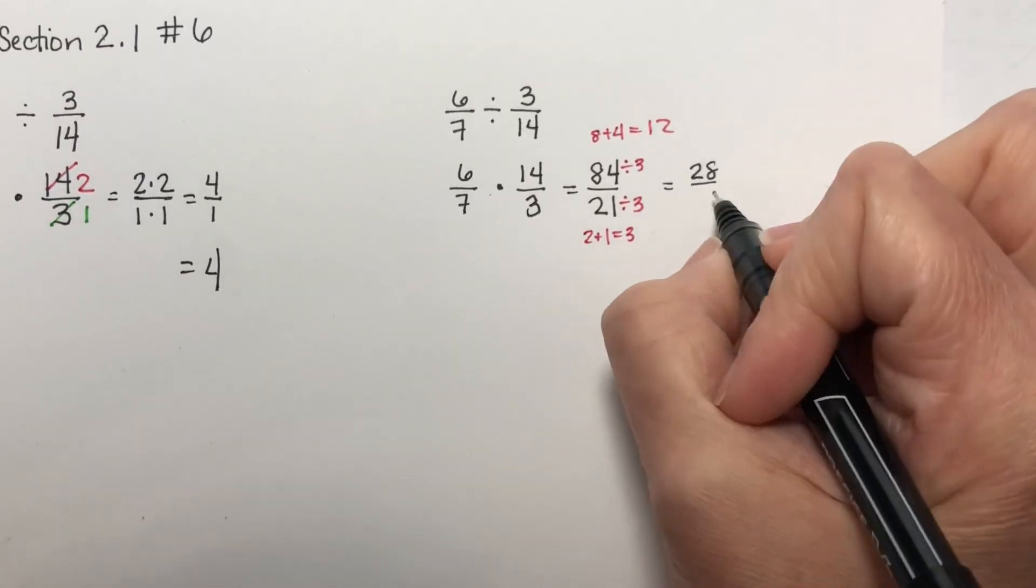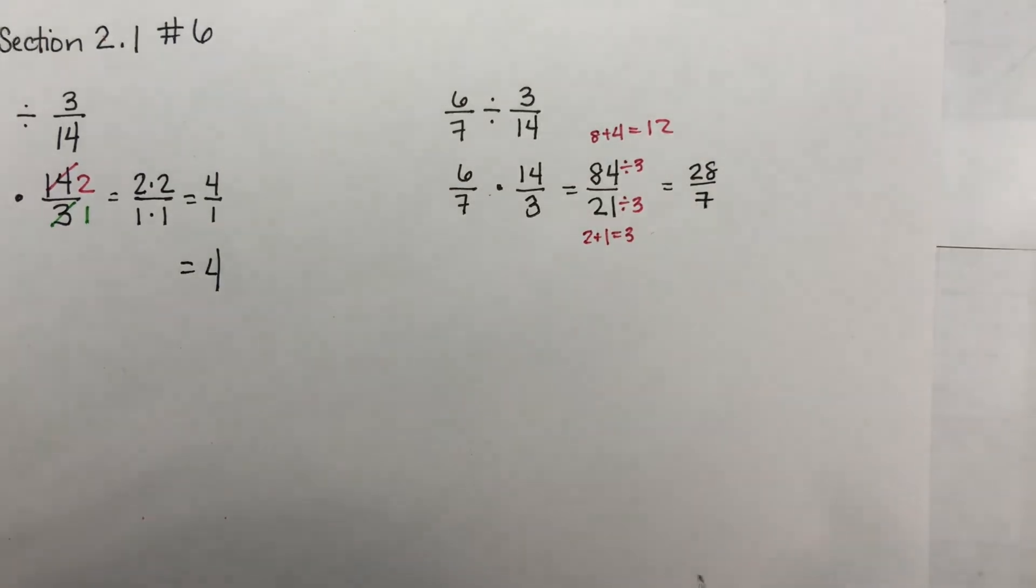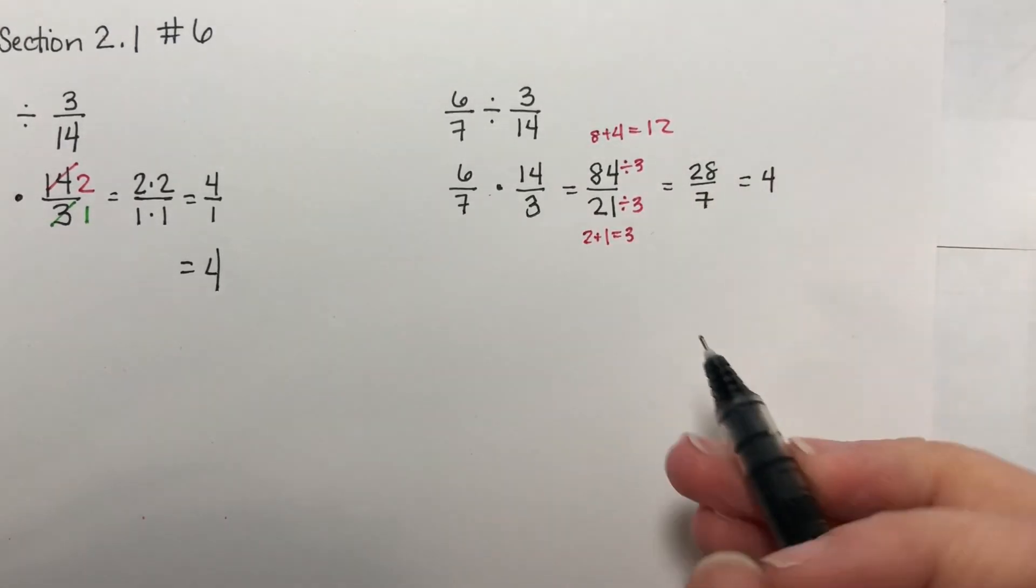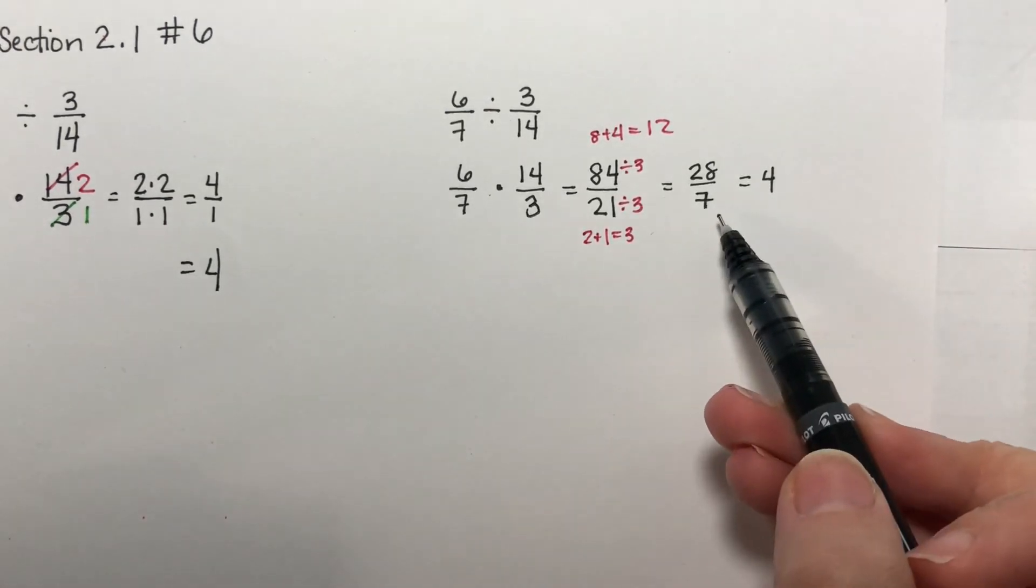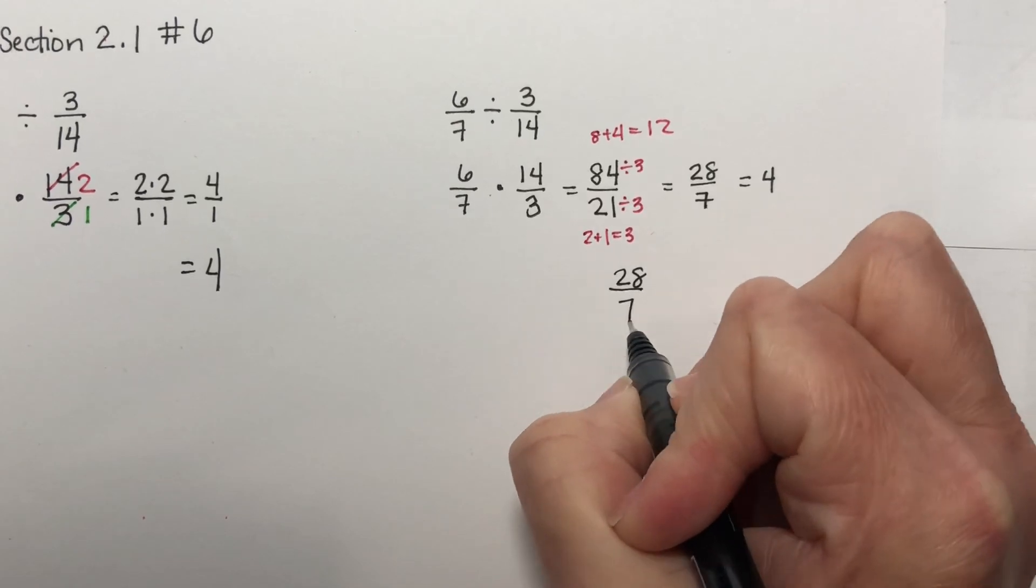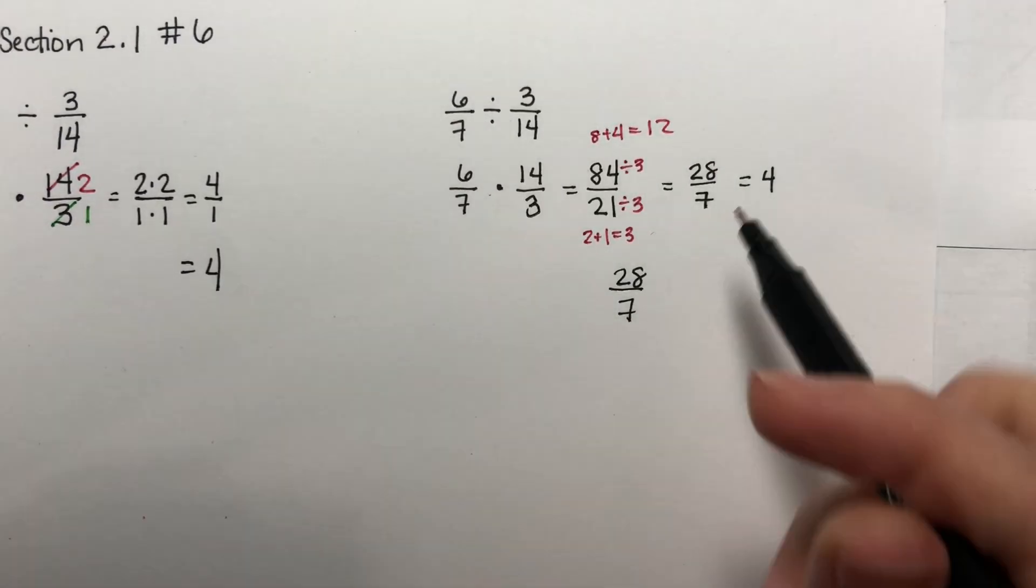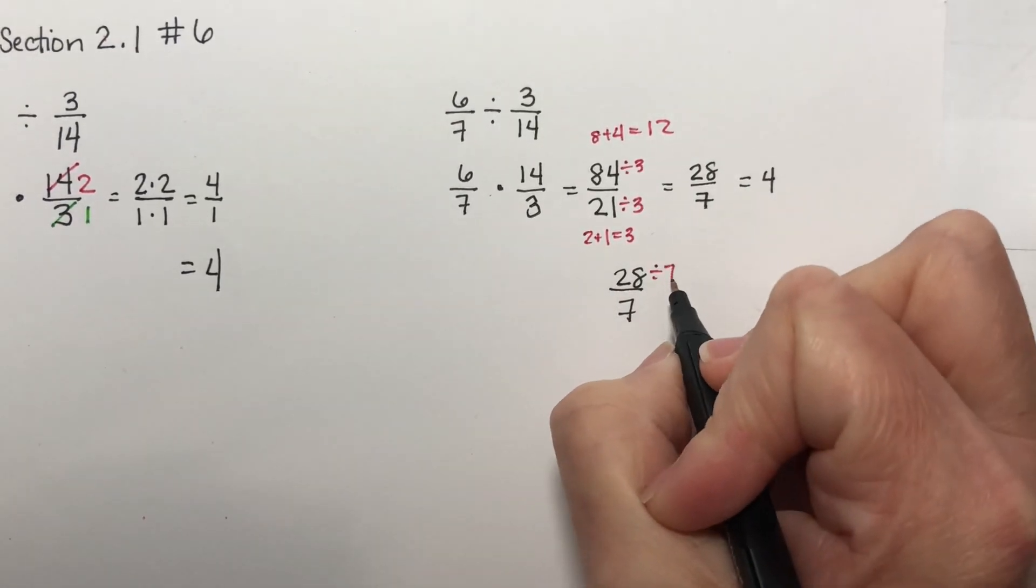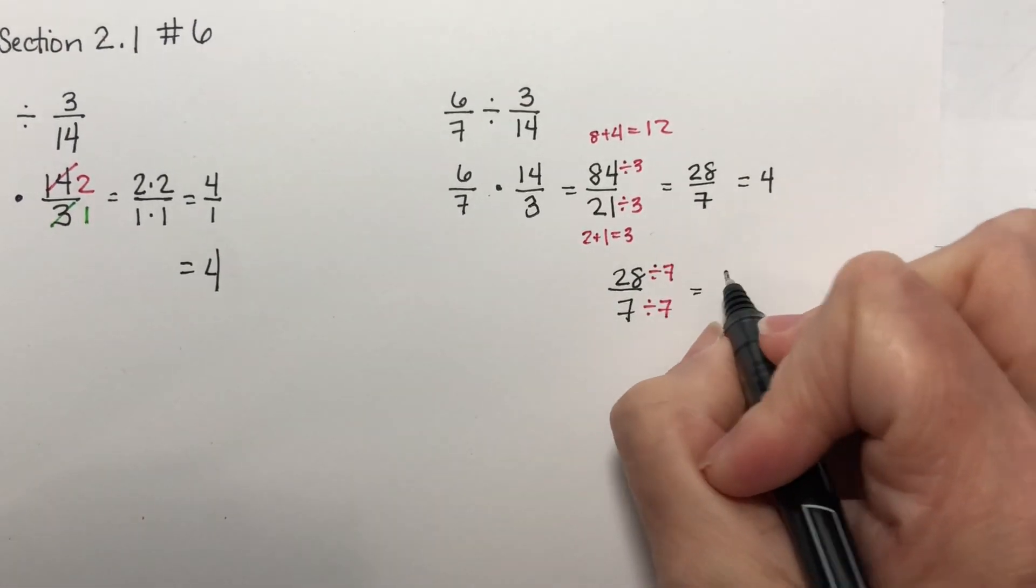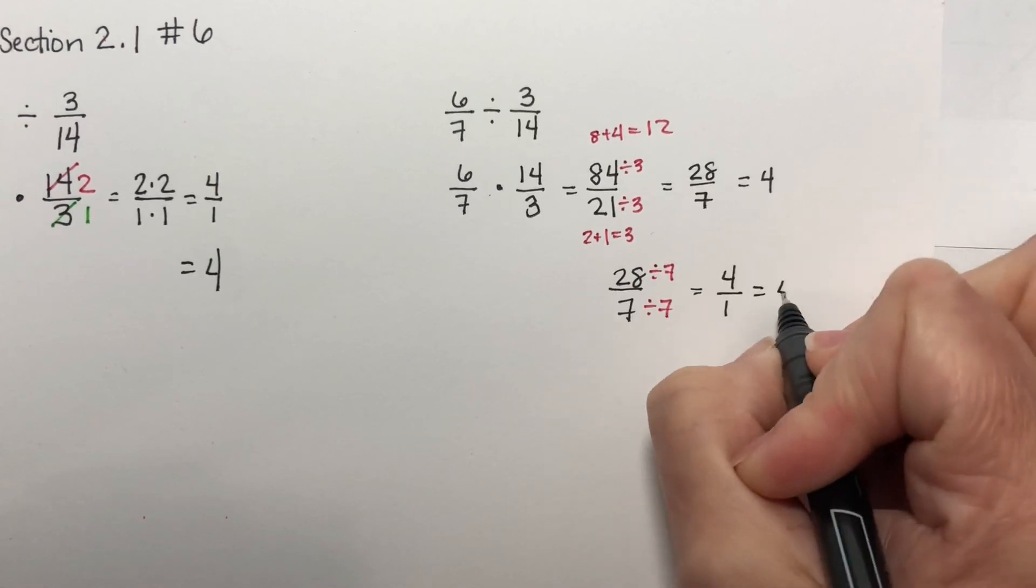21 divided by 3 is 7. Now hopefully you recognize that this is 28 divided by 7, which is 4. But even if you don't, you would look at this to see if it's in lowest terms. And you'd say, well, they're both divisible by 7. I'm rewriting it here. If I divide both by 7, then I get 4 over 1, which is just 4.